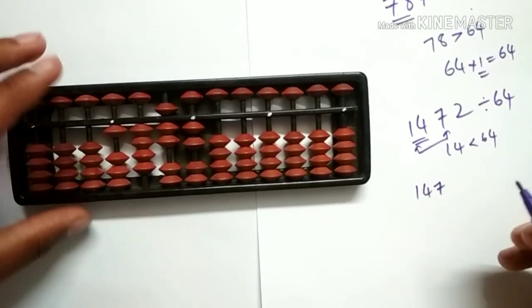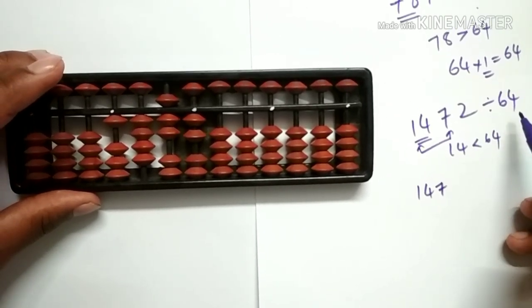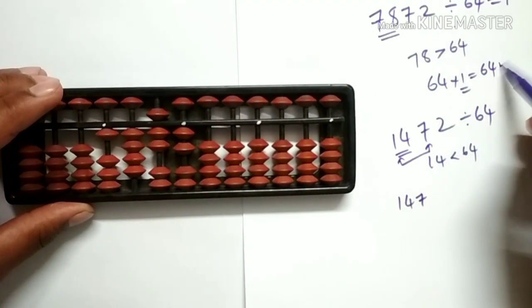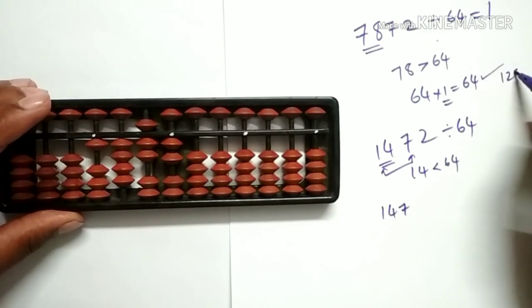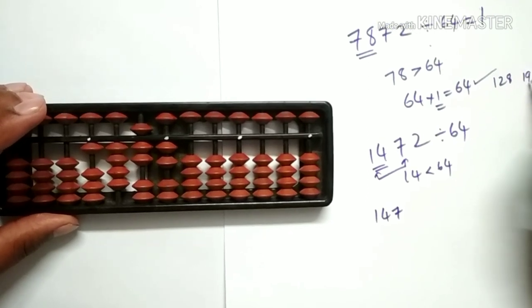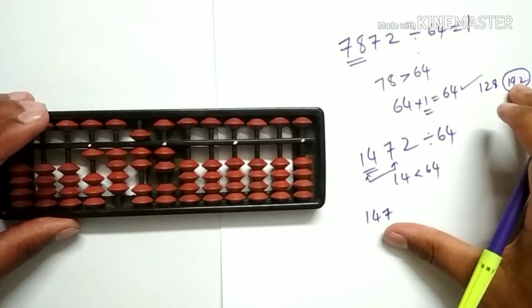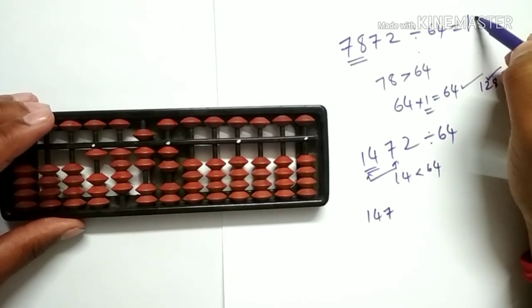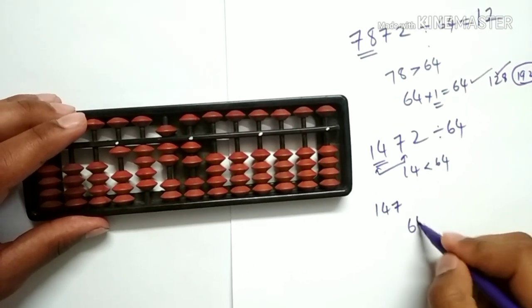Let's check for nearest multiples in the table of 64 by trial and error method. Now 64 into 1 is 64, 64 into 2 is 128, and 64 into 3 is 192. Because 192 is greater than 147, we will go for 128. Let's write 2 here, because 64 into 2 is 128.